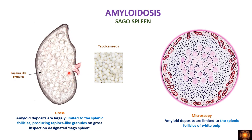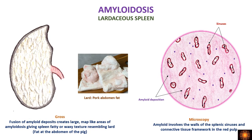The small nodules in the sago spleen are seen because in this condition amyloid is deposited only in the lymphoid follicles, that is in the white pulp. Wherever the follicles are, deposition occurs and grossly it appears as a small nodule — hence the name sago spleen.